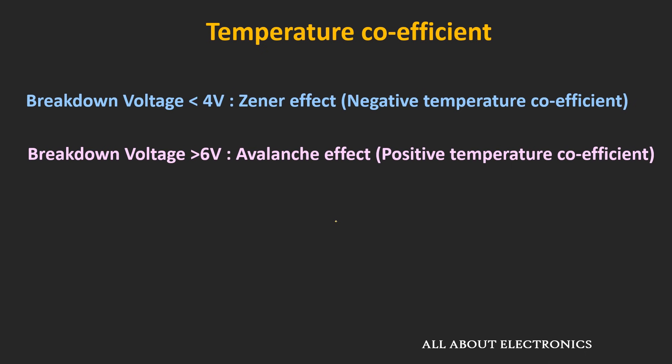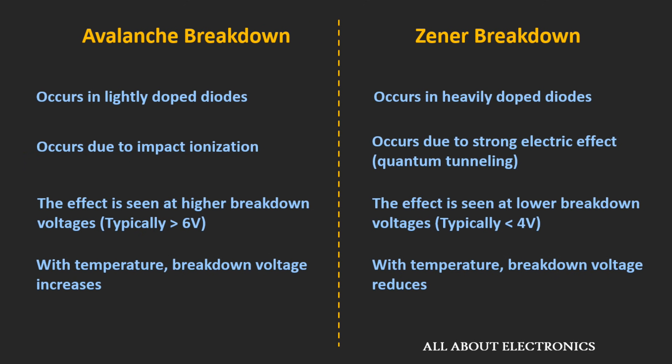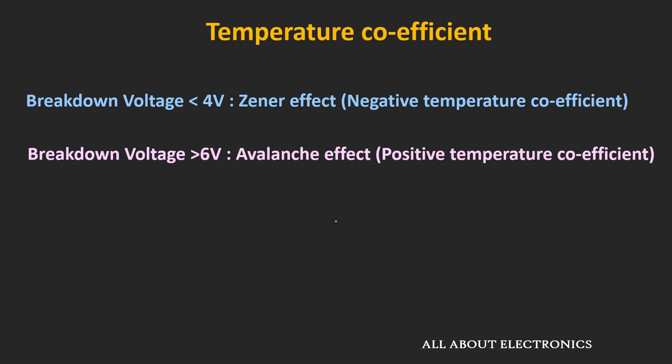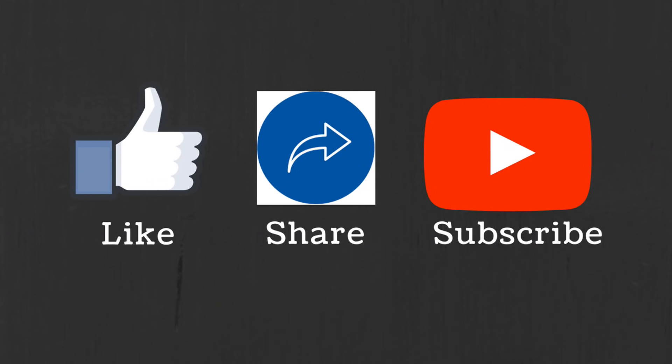So this is all about the avalanche and the Zener breakdown effect. In summary, here is a list of the differences between the avalanche and the Zener breakdown effect. I hope in this video you understood the two types of breakdown mechanisms commonly seen in the P-N junction diode. If you have any question or suggestion, do let me know in the comment section below. If you like this video, hit the like button and subscribe to the channel for more such videos.